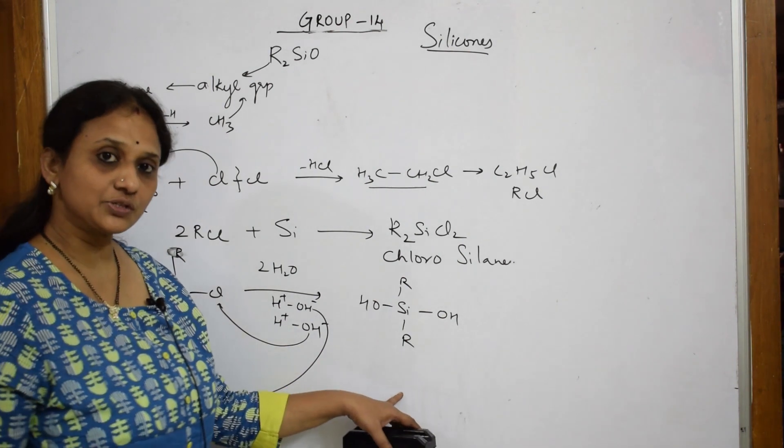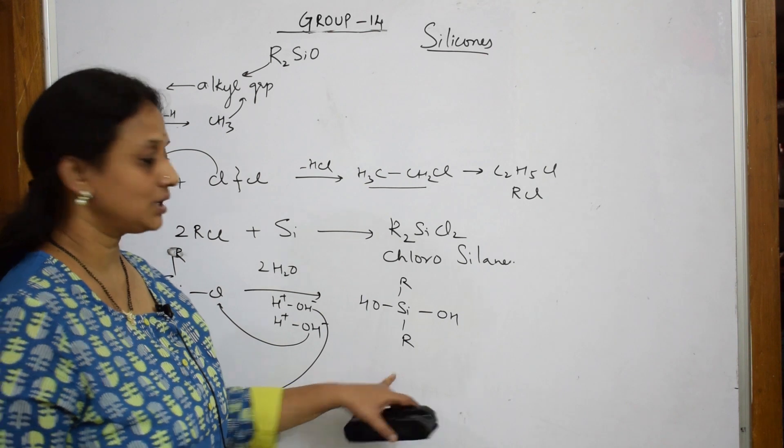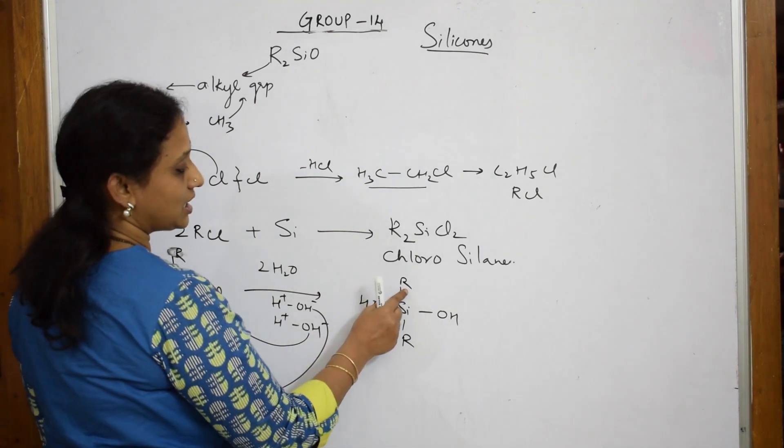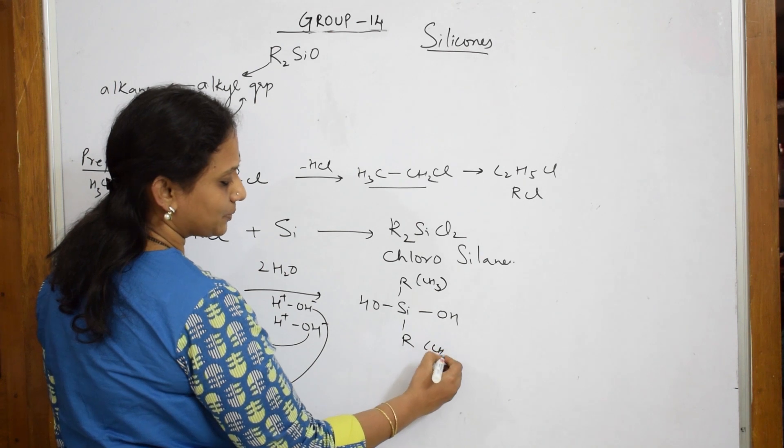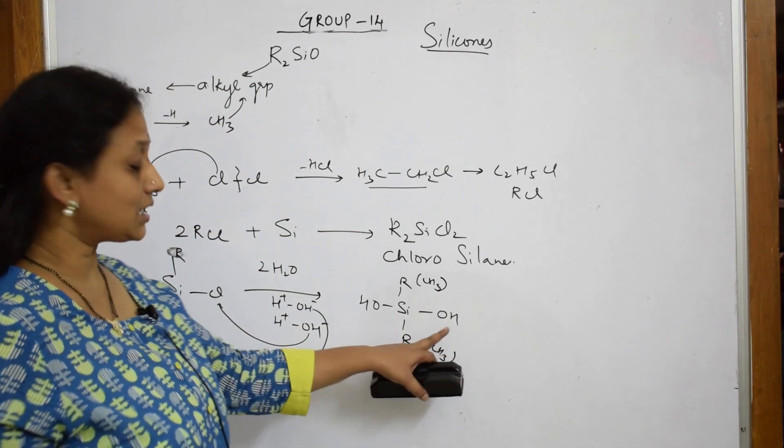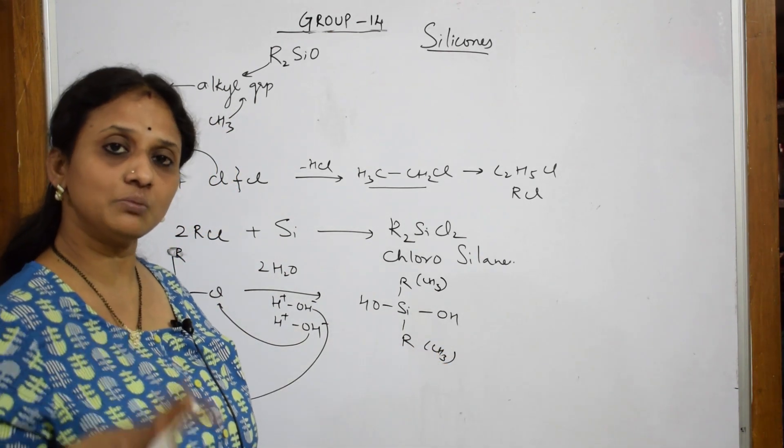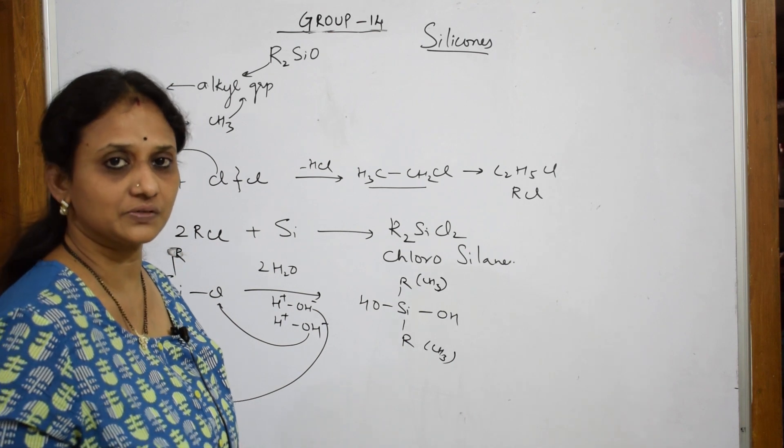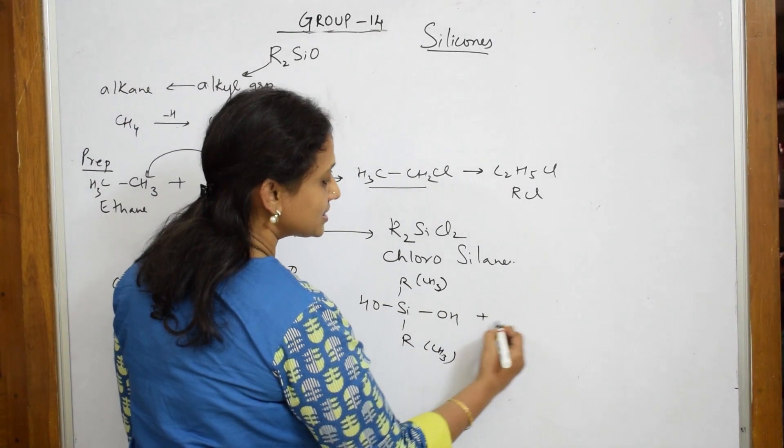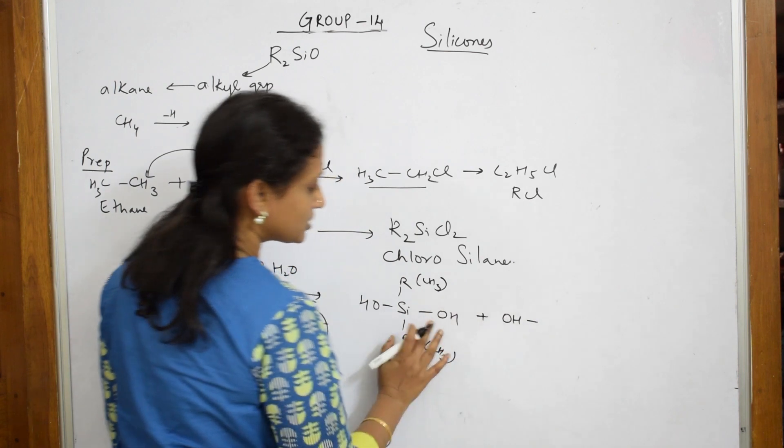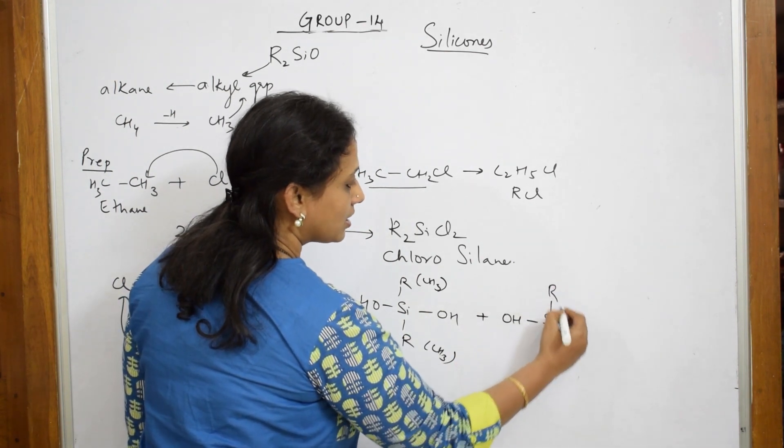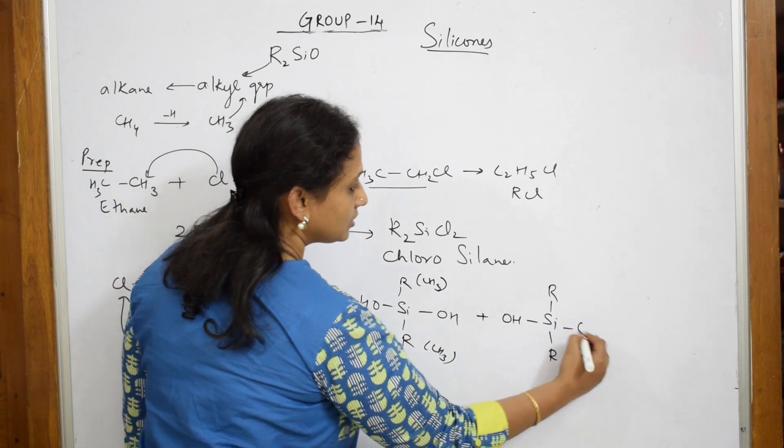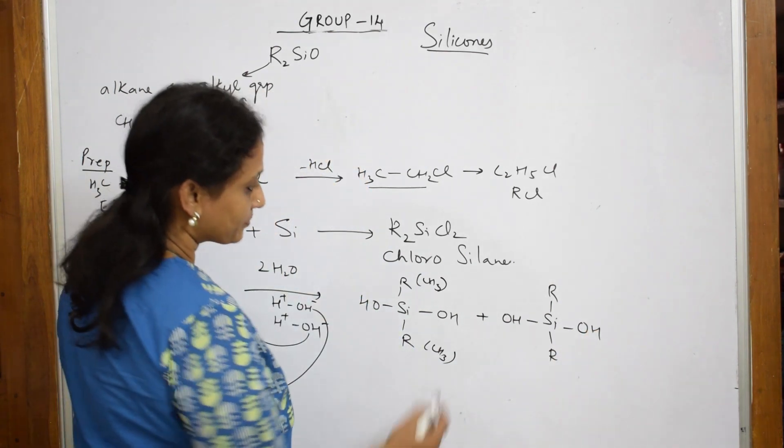Now, what does this do? This particular compound, this R, you can write it as CH3 also. Methyl, ethyl, propyl, anything. This R group is going to condense with one more molecule. So, when this condenses, it becomes again O. Now, just trace this. This whole thing, I am writing it here. Si, R, R and OH.